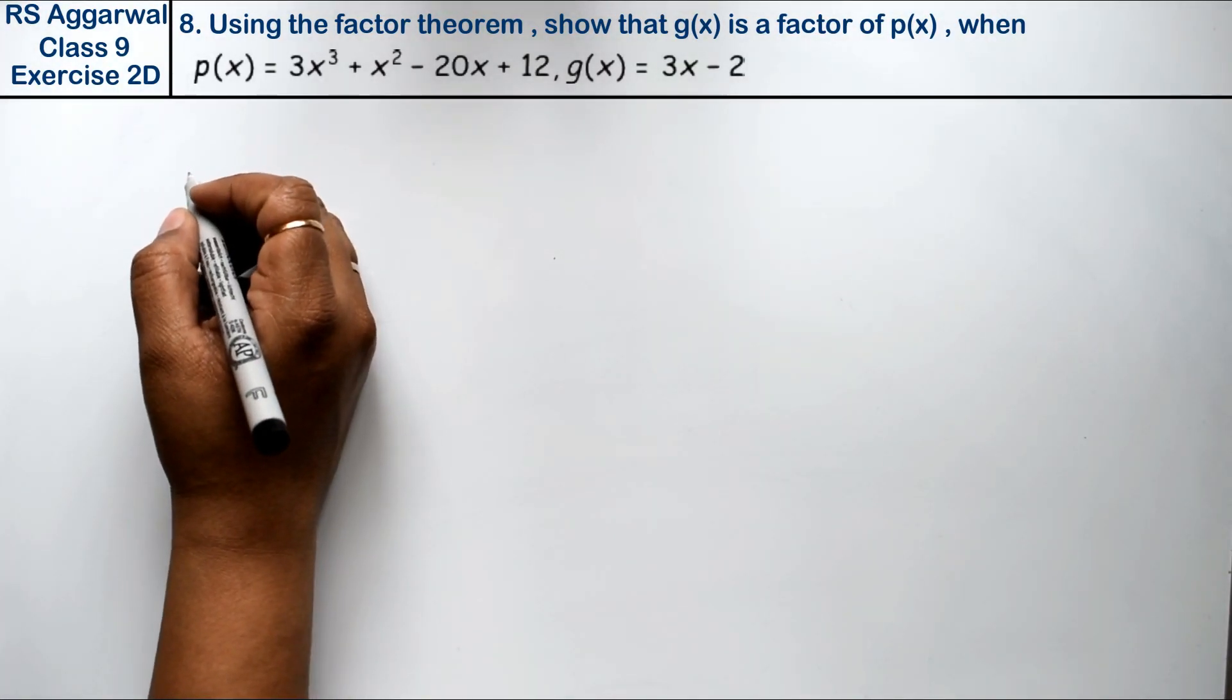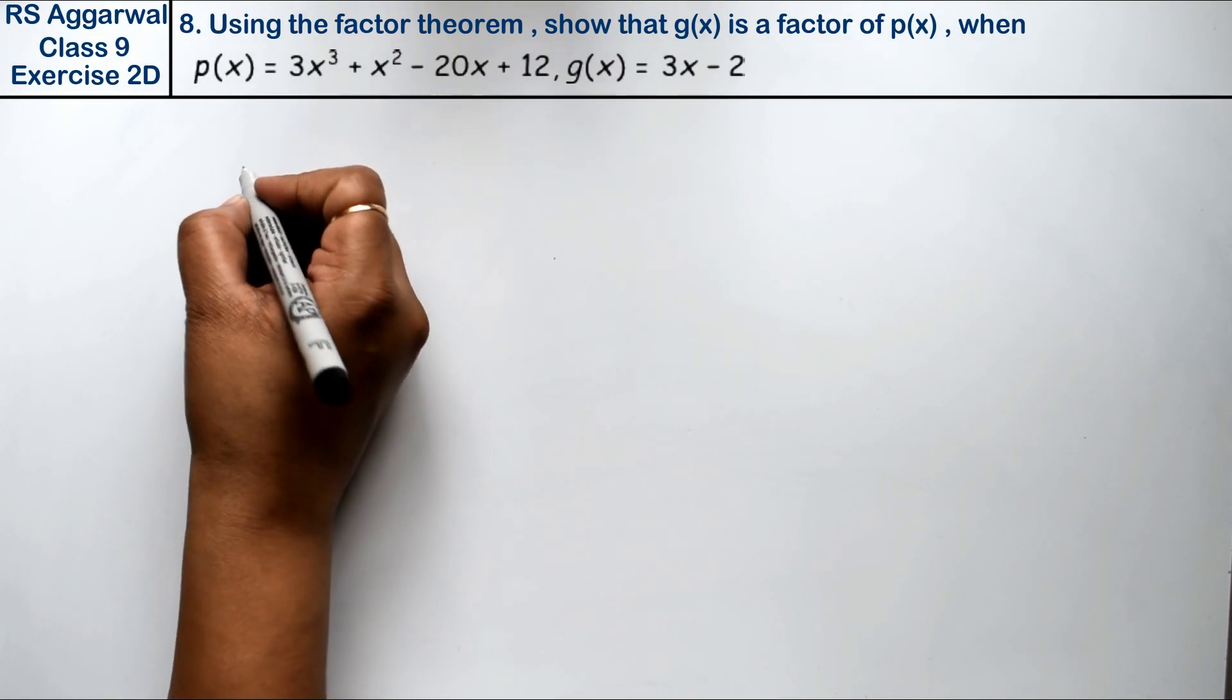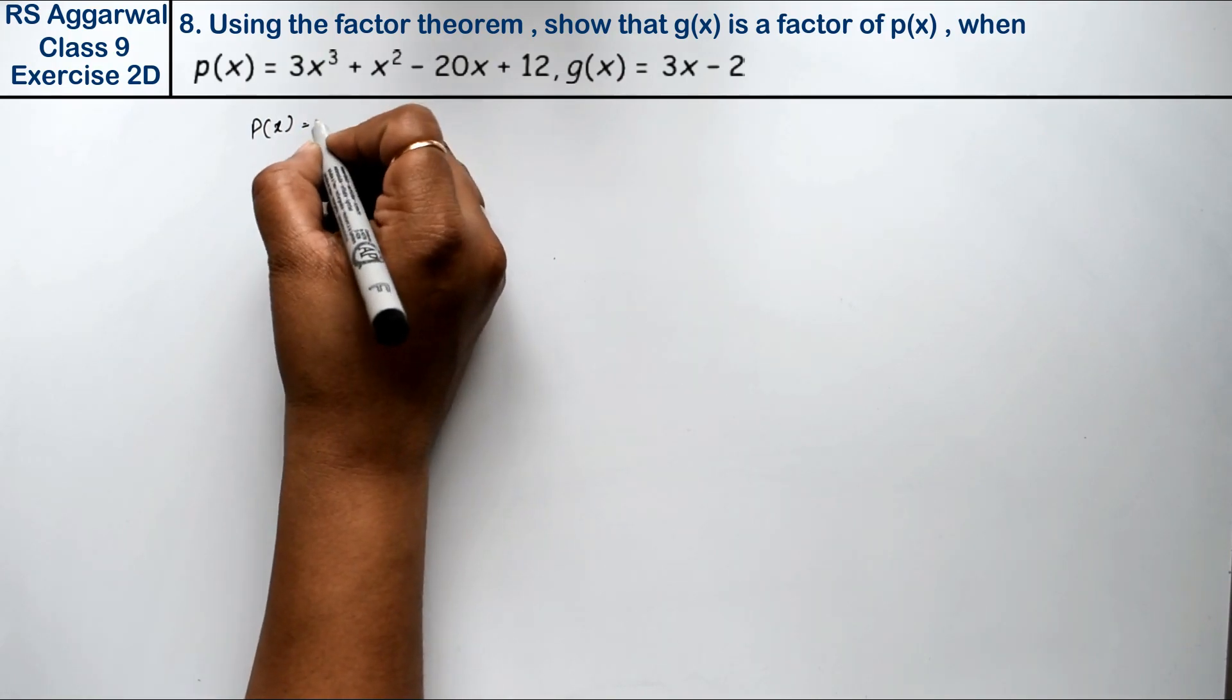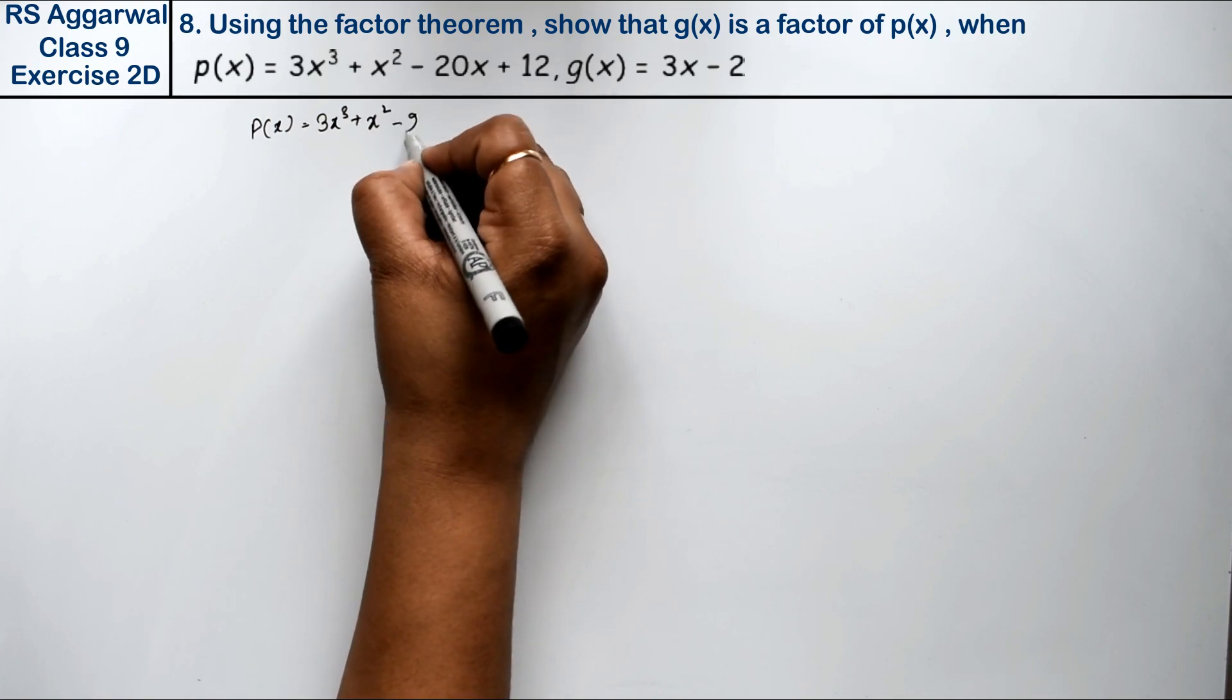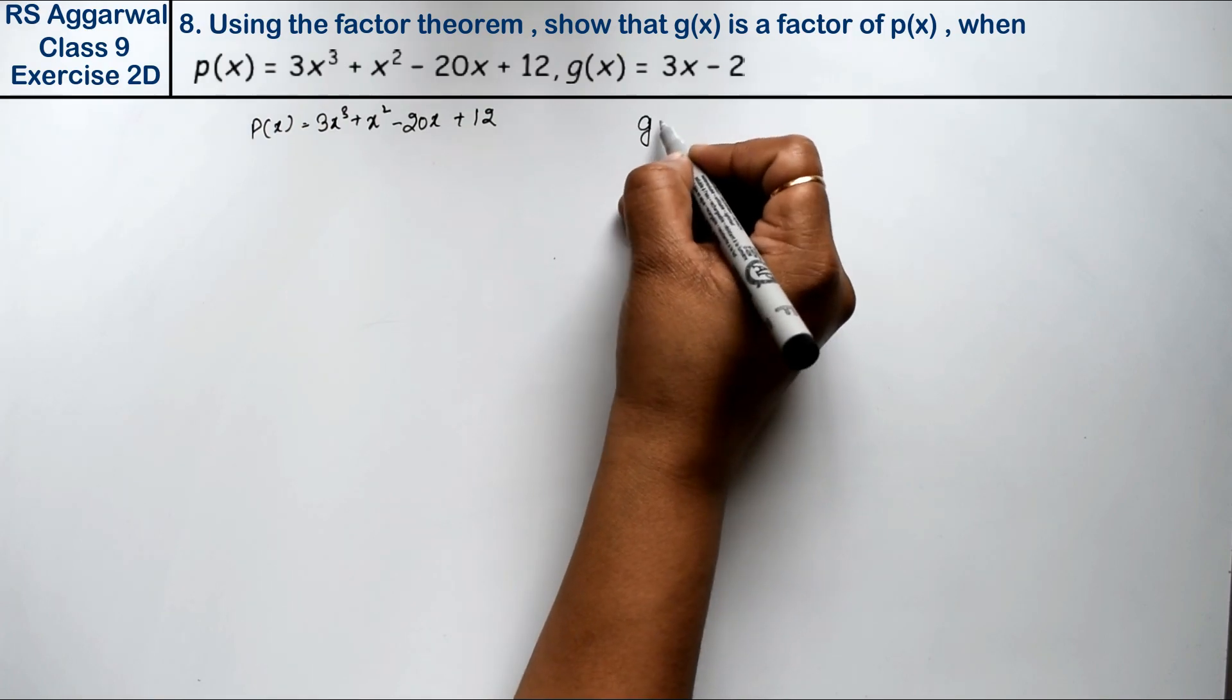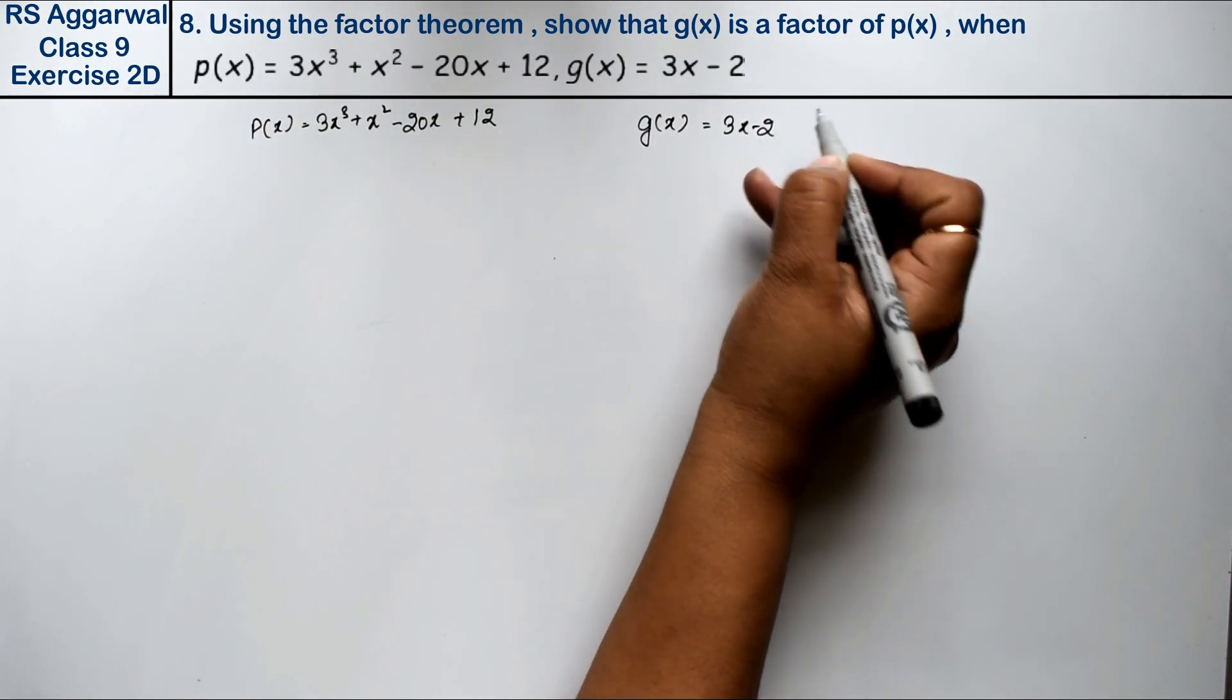Using Factor Theorem, show that g(x) is a factor of p(x) when p(x) = 3x³ + x² - 20x + 12 and g(x) = 3x - 2.